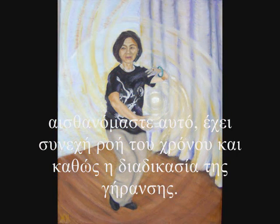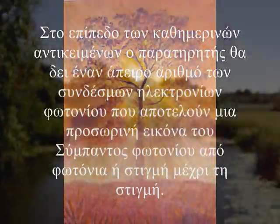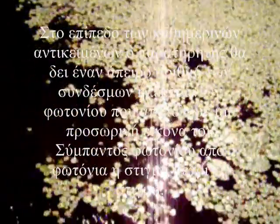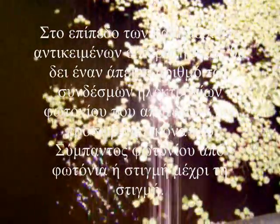On the level of everyday objects, the observer will see an infinite number of photon-electron couplings, creating a temporary image, moment by moment, or photon by photon.